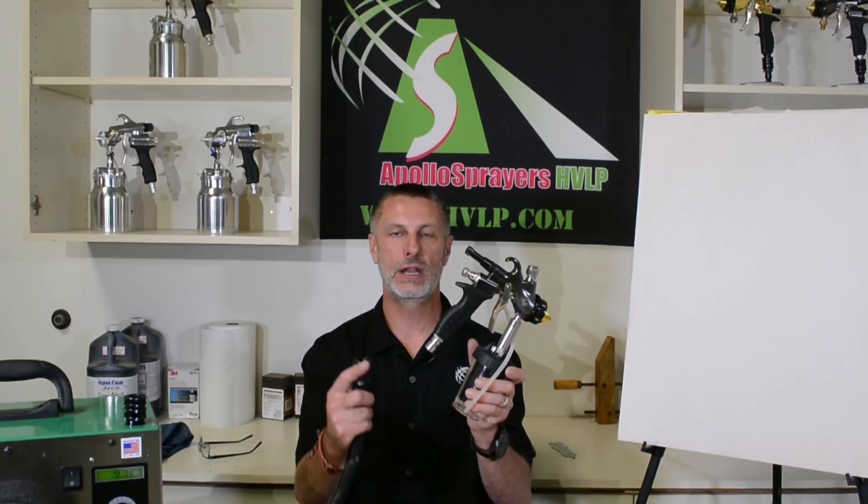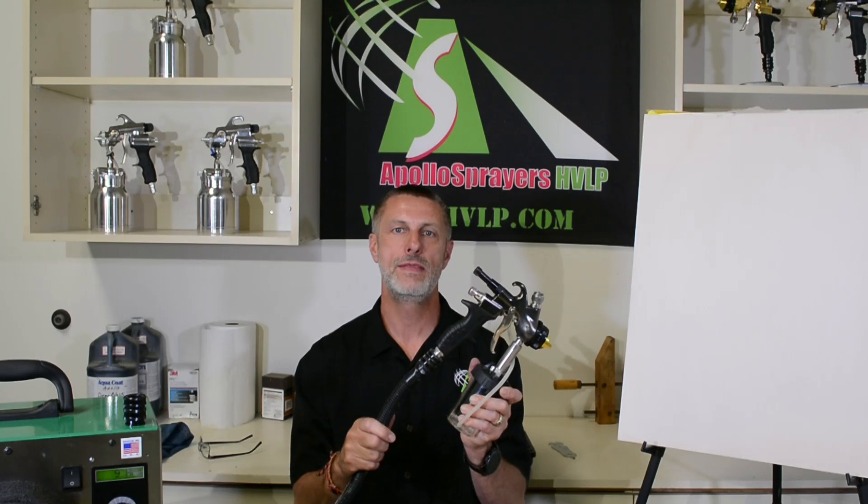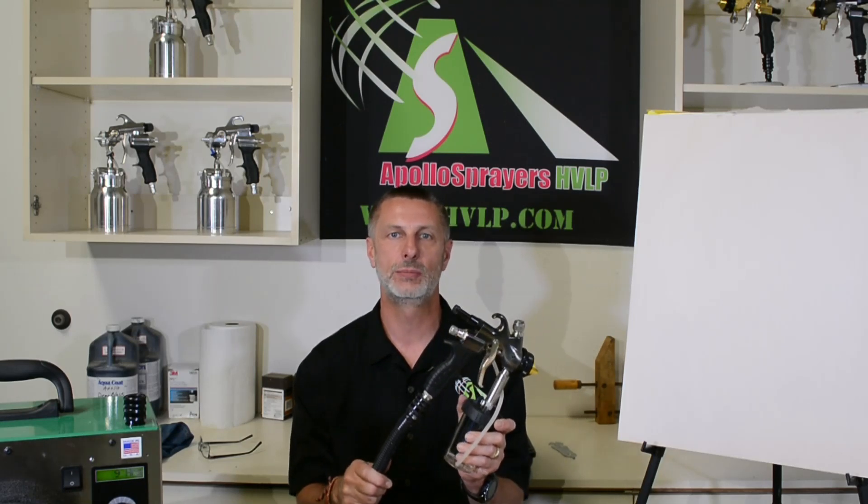The first thing we're going to need to do is connect the machine, the air hose, to the spray gun. And next we'll turn on the machine and adjust the pressure.